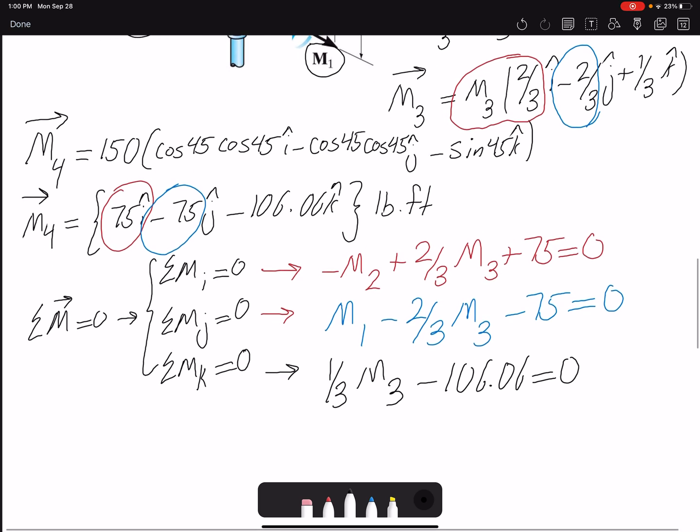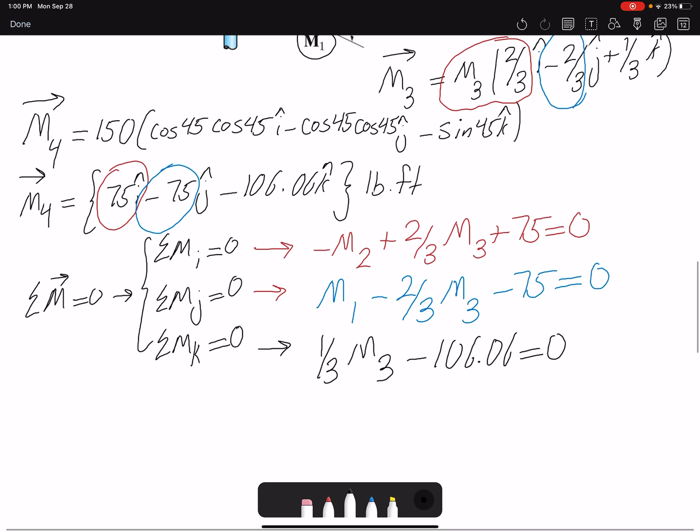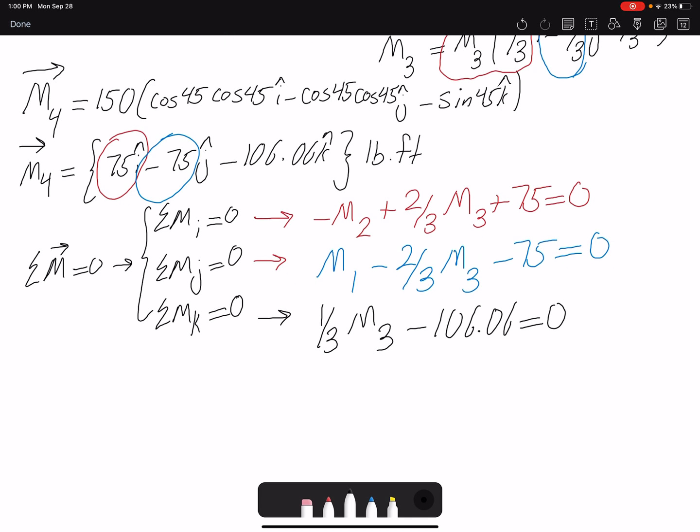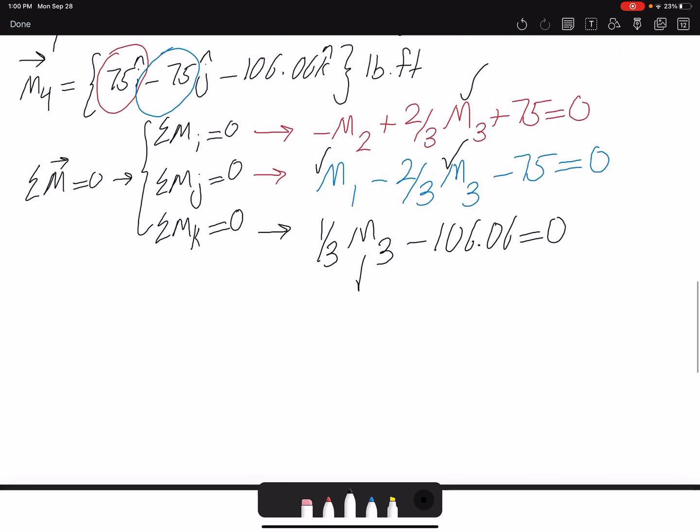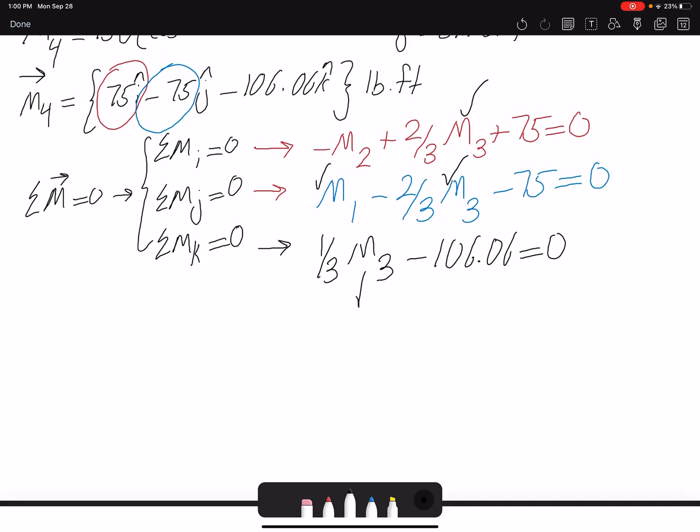So there are three equations and three unknowns. We can solve it, but we don't have to solve three simultaneous equations. In this equation, the only unknown would be M3, so we can find M3, then we plug it in here to find M1, and then once we have M1 and M3, we find M2.